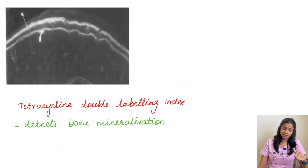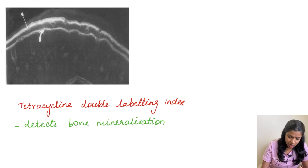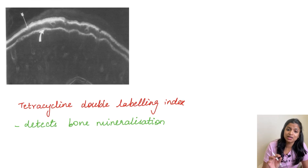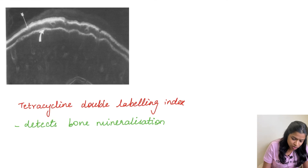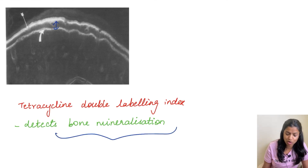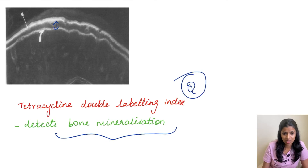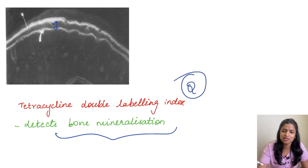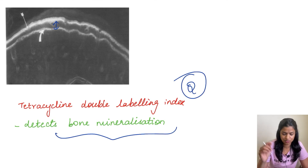The tetracycline double labeling index: the distance between two tetracycline labels is used for calculating bone mineralization. This has been asked as an MCQ — tetracycline labeling index is used for detecting bone mineralization.